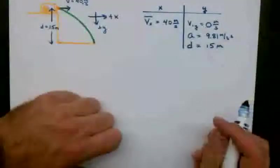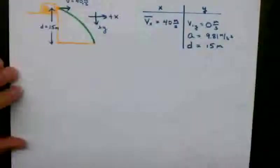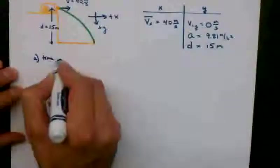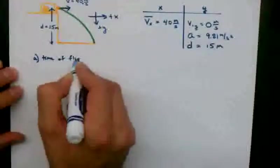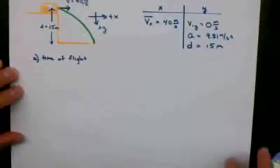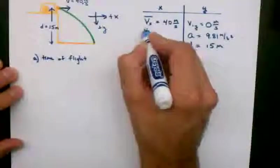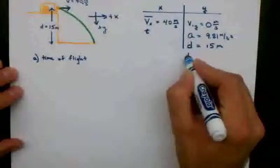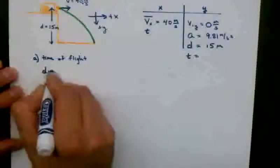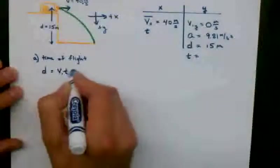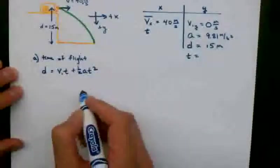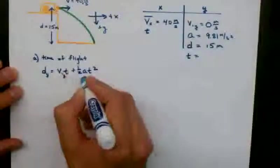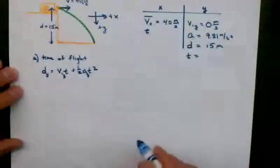I can now go about solving my problems. Part A wants me to find the time of flight. To find the time of flight, I can't use my x information, I just don't have enough information to select the formula. But for the y, I can choose d equals v_i t plus 1 half a t squared. Remember to use only y information, so distance in the y, initial velocity in the y, and acceleration in the y direction.